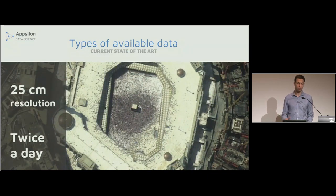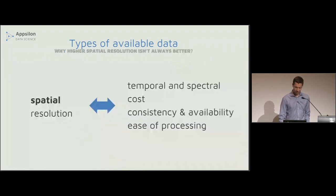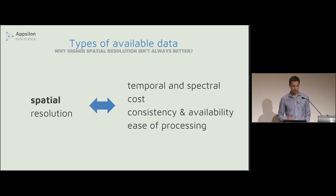The current state of the art is 25 centimeter resolution images twice a day, but bear in mind that each of these characteristics comes from a different satellite mission — you cannot get both at the same time, so choose wisely depending on your use case. Higher spatial resolution is not always best. With lower spatial resolution you can get higher temporal resolution, higher spectral resolution, lower cost, higher consistency and availability, and smaller images that are generally easier to process.